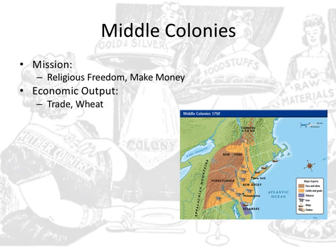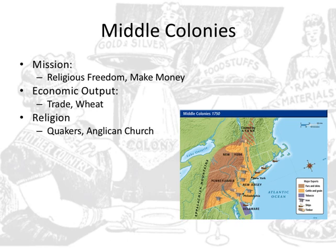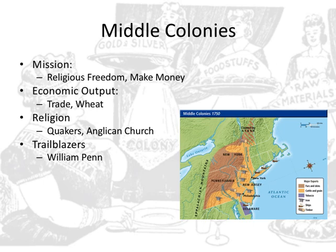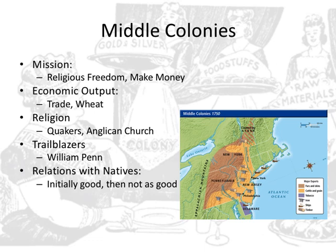Their economic output was mostly trade, but also included foodstuffs like wheat, barley, and corn — they would be considered the breadbasket of the colonies. Religion depended on where you were: most in Pennsylvania were Quakers, but the Anglican Church was also popular, especially in parts of New Jersey and Delaware. Trailblazers include William Penn, the first governor of Pennsylvania, who was given a massive tract of land from the King of England. Compared to the Chesapeake and New England, the relationship with the natives was initially very good — the Quakers had a relationship based on pacifism. But as time went on and there was further encroachment westward, the relationship with indigenous people went down the drain.